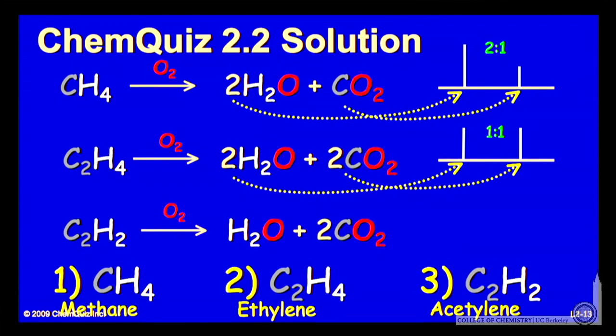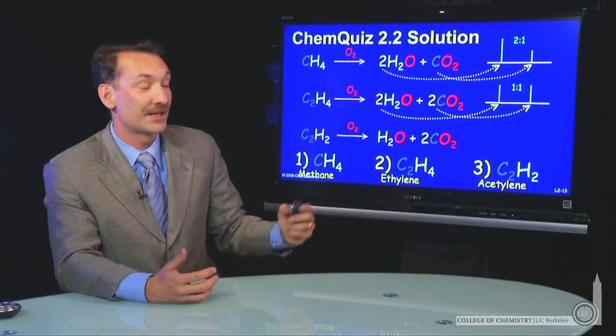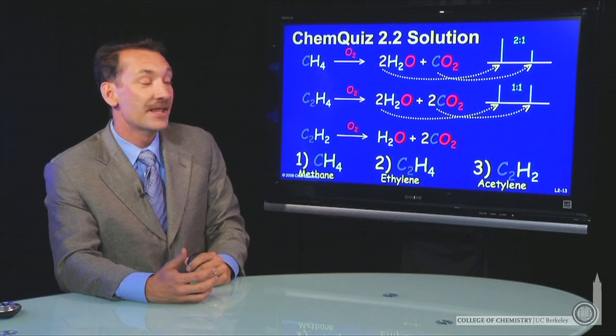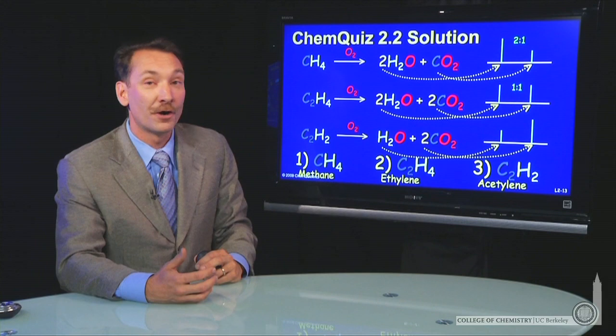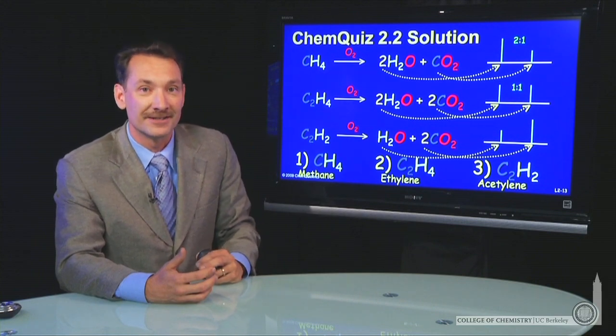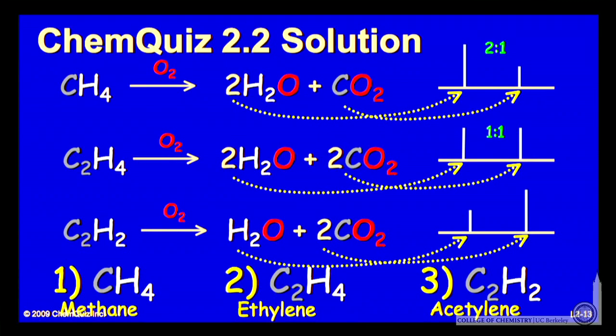The third possibility, acetylene has one water molecule and two carbon dioxide molecules formed in the balanced chemical reaction with oxygen. That would give us a peak at 18 and a peak at 44 of twice the height. So indeed, acetylene with the 1 to 2 peak height ratio was the hydrocarbon that was burned in this experiment.